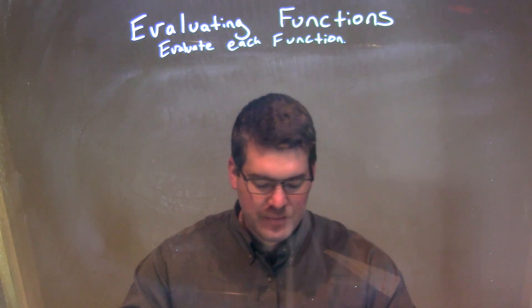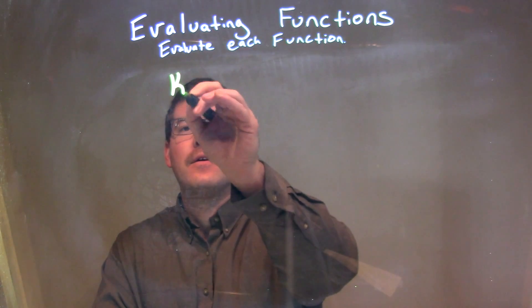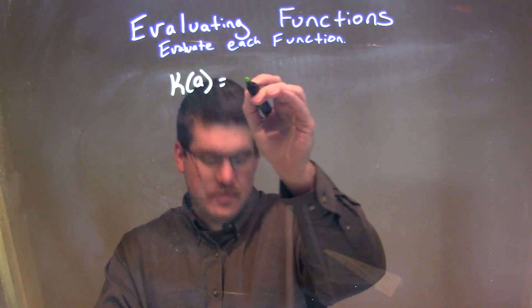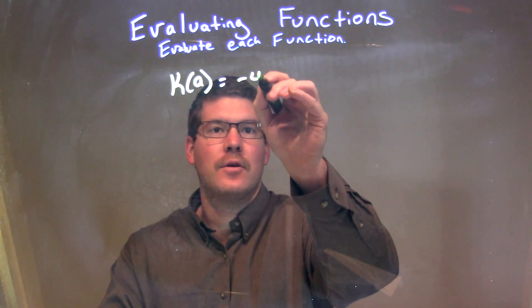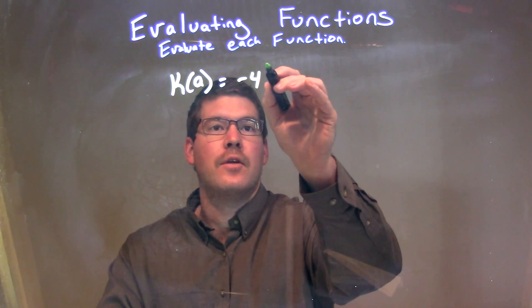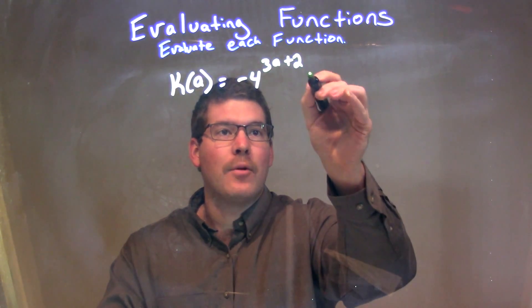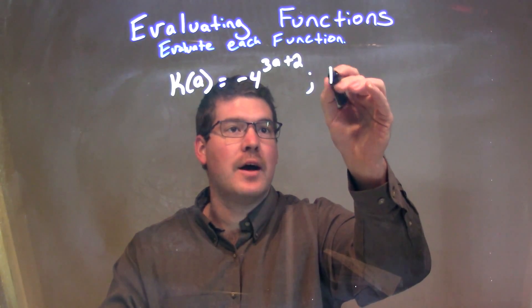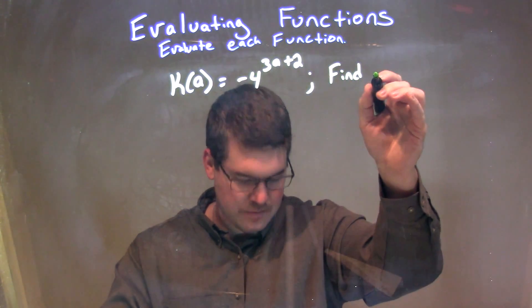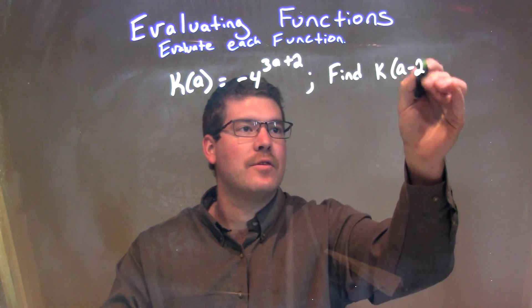If I was given this function, k of a is equal to negative 4 to the 3a plus 2 power, and we want to find k of a minus 2.